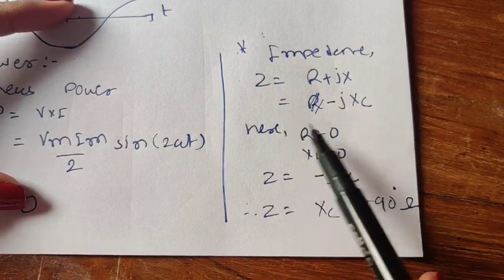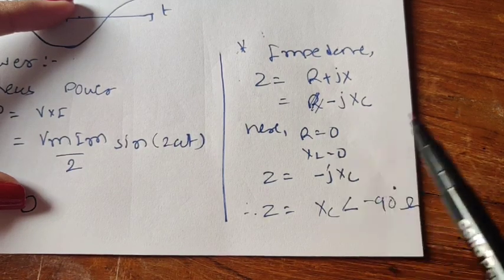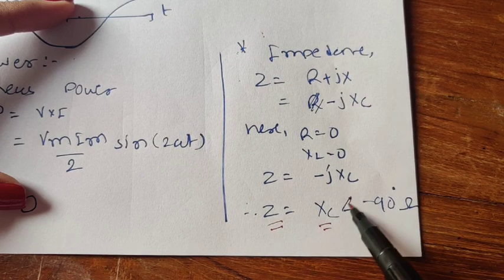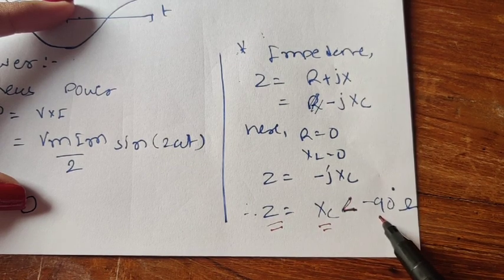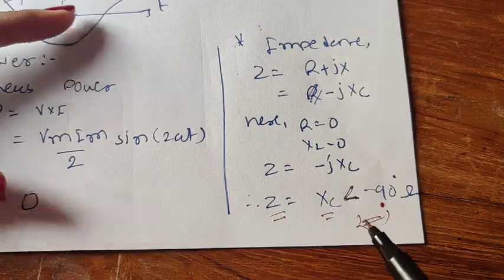The impedance for a purely capacitive circuit is Z = R + jX; since R = 0 and X_L = 0, Z = −jX_C, giving Z = X_C with a phase angle of −90°. This concludes how an AC circuit behaves when using only resistance, only inductance, or only capacitance as the circuit element.